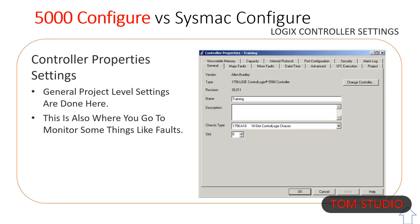Communications test basically does a ping. You can name the controller or change the model, select the chassis and CPU slot, set the project path, enable ports in the port config tab, and configure security settings in the security tab. Other tabs are mostly for monitoring or settings while online, like the clock.